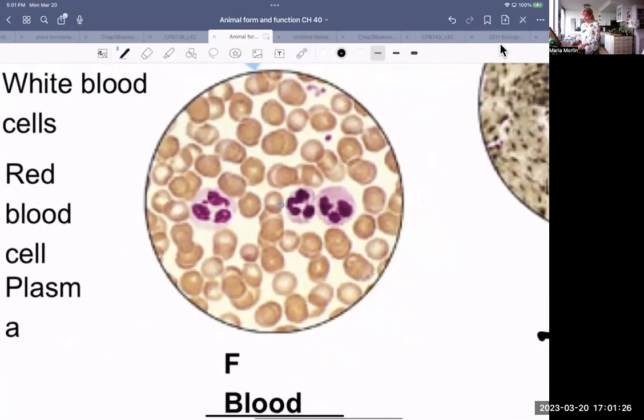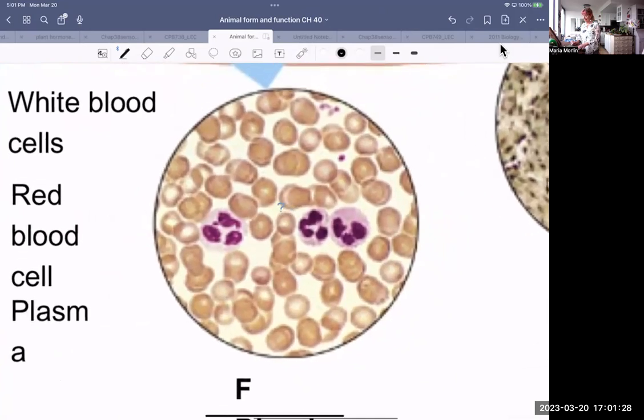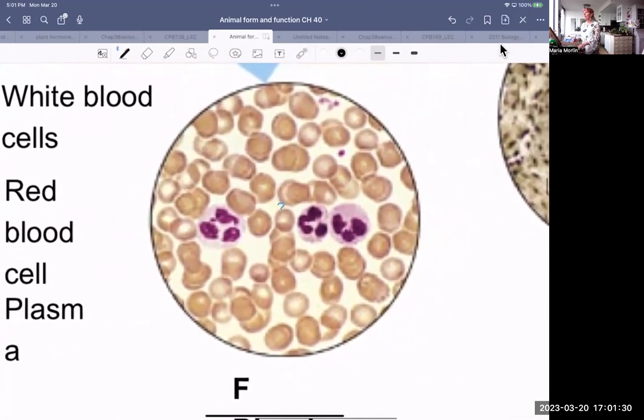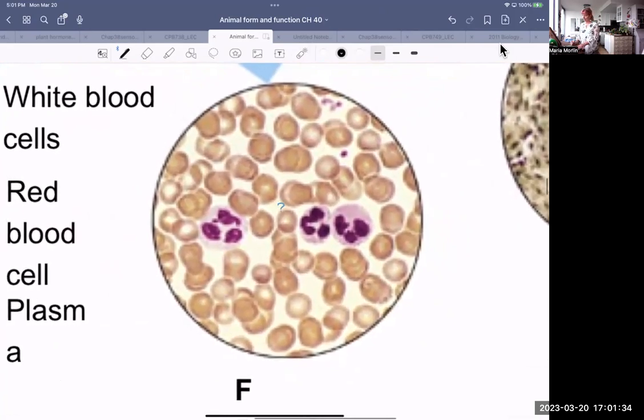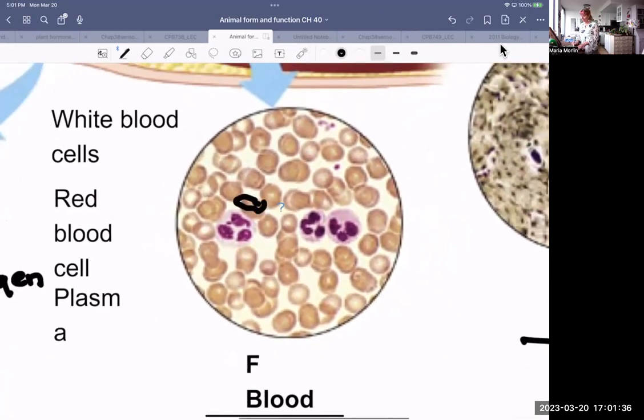And blood. Blood is considered also a connective tissue. It connects various parts of the body with arteries and veins. It's got red blood cells and white blood cells.